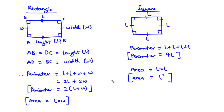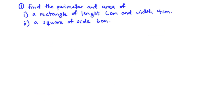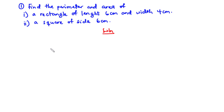Now let's take some examples. For the first example: find the perimeter and area of (i) a rectangle of length 6 centimeters and width 4 centimeters, and (ii) a square of side 6 centimeters. Let's solve this together.